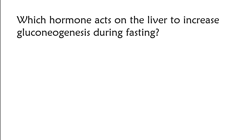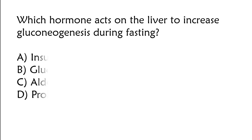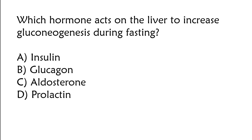Which hormone acts on the liver to increase gluconeogenesis during fasting? Insulin, glucagon, aldosterone, prolactin. The correct answer is glucagon (Option B).